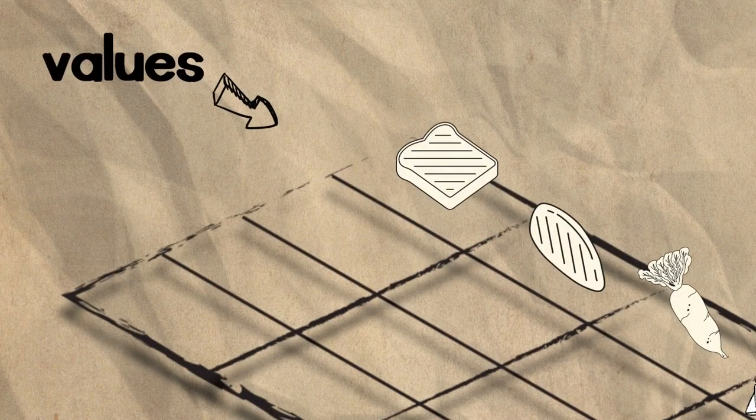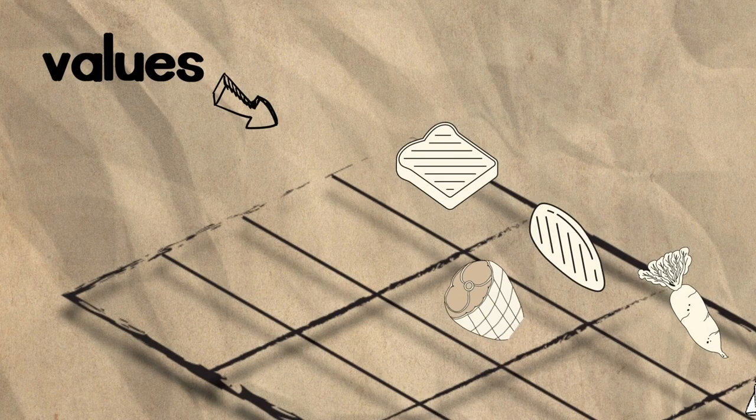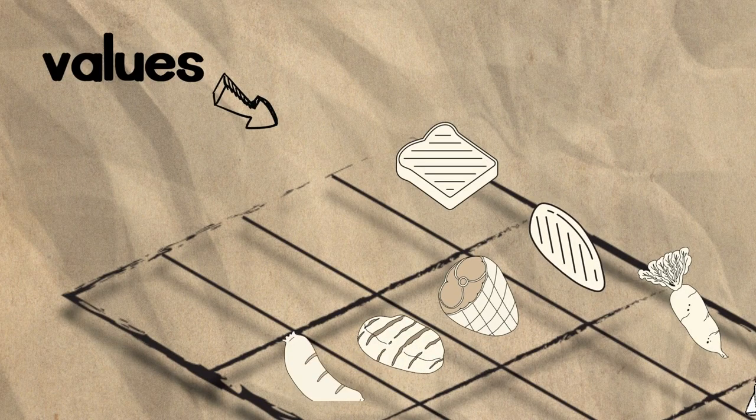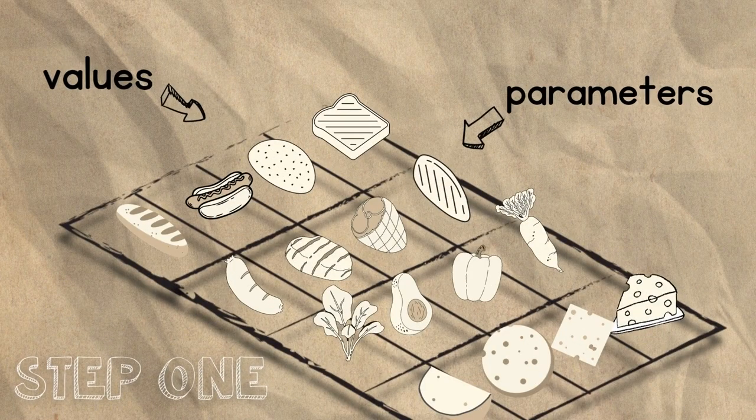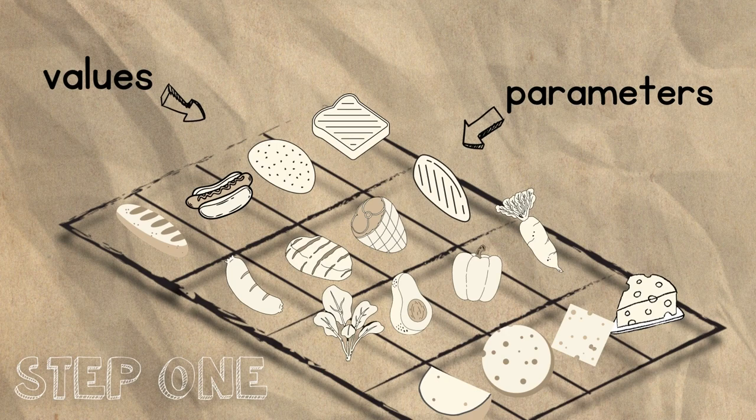Your values are the possible solutions to each parameter. So for meat, your values might be ham, beef patty, chicken, and sausage. Step 1 is to identify as many of these values and parameters as possible and list them on a grid, putting values on one axis and parameters on another.